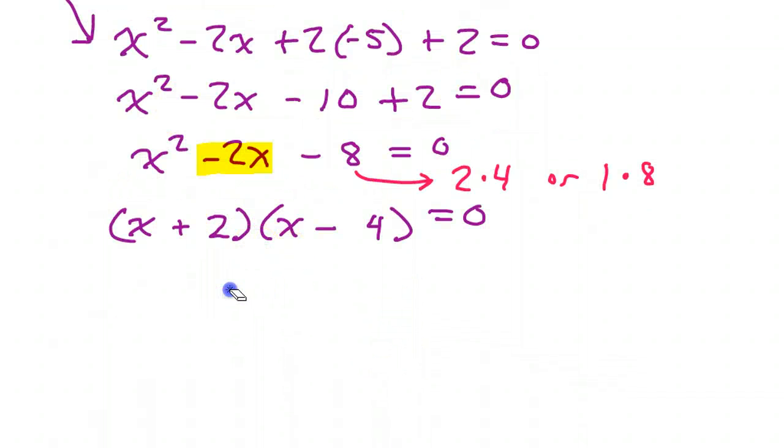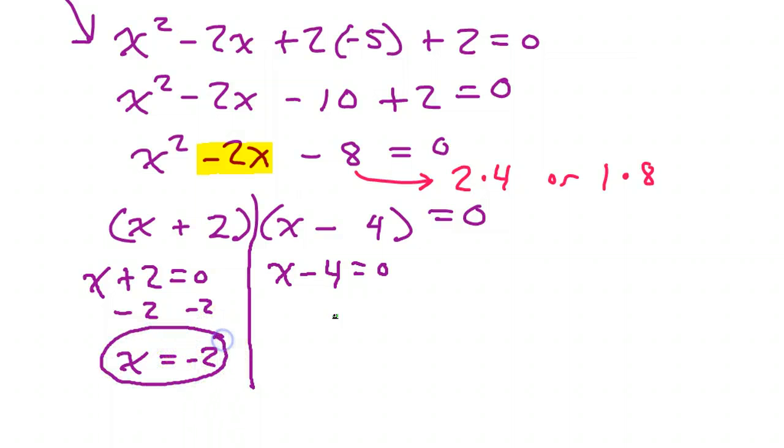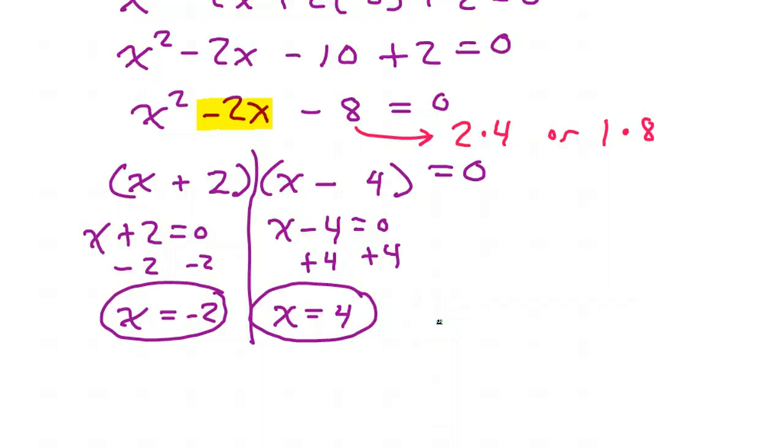So, we will continue to solve this by setting these factors equal to 0. So, if I set x plus 2 equal to 0 and x minus 4 equal to 0. Subtracting 2 from both sides gives me x equals negative 2. And adding 4 to both sides gives me x equals 4. So, I've got these 2x values, negative 2 and 4.